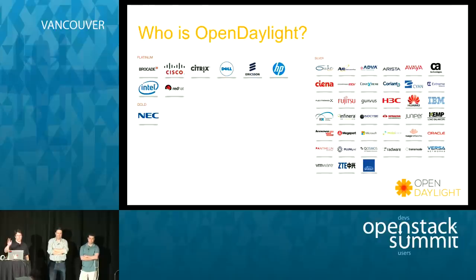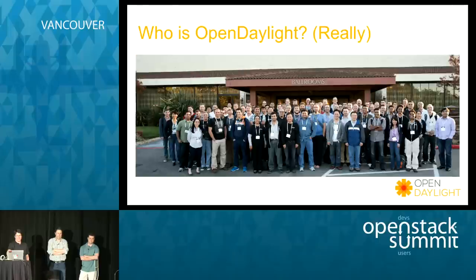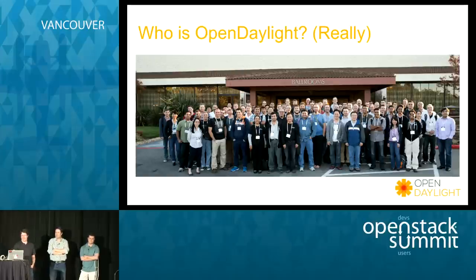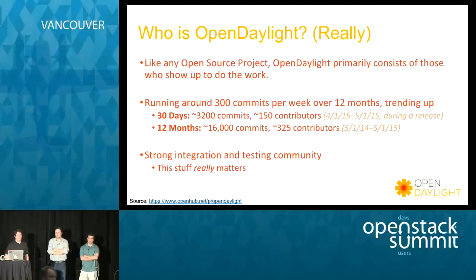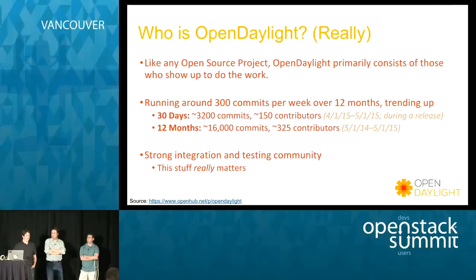Who is OpenDaylight? It's a bunch of companies you'd recognize — your NASCAR slide. But really it's who shows up and does the work. We're running something like 300 commits a week over 12 months, about 150 contributors over any 30-day period, and something like 300–400 contributors overall, building something like 2.5 million lines of code.